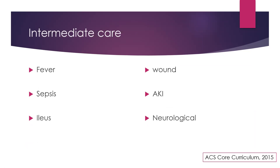In intermediate post-operative care, we are concerned about: fever, sepsis, ileus, wound infection, deep space infection, acute kidney injury, and neurological issues. The NEWS score — used as standard in the NHS — is based on respiratory rate, oxygen saturation, supplemental oxygen need, temperature, systolic BP, pulse rate, and level of consciousness. You don't have to memorize the values, but keep a score table in your pocket. A high score may mean you need to consider shifting the patient back to ICU or a high dependency unit.